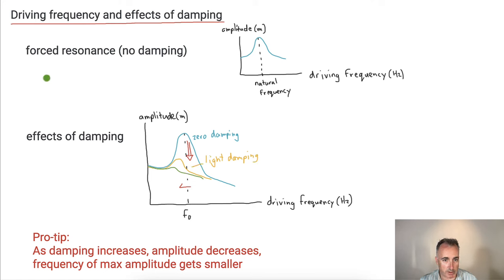So we've looked at the effects of resonance. Natural frequency is the frequency at which something will vibrate by itself. If you give it a driving frequency at its natural frequency, you cause the amplitude to get bigger. Damping does the opposite — it makes the amplitude get smaller. We covered underdamped, overdamped, and critically damped, and we learned about the effects on the amplitude peak: as you increase damping, it brings the peak down and to the left.